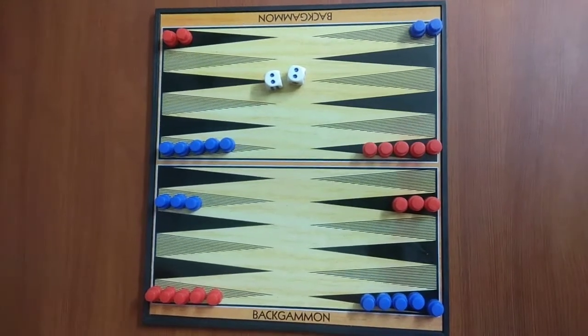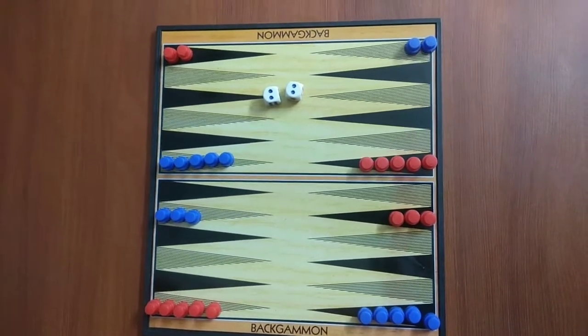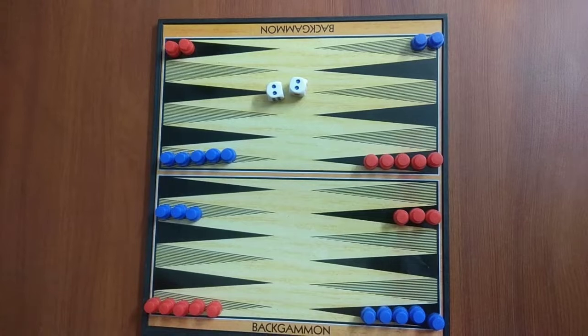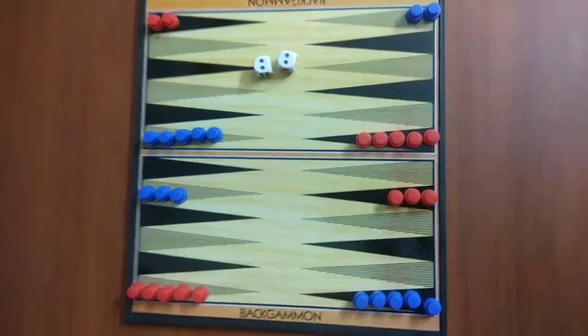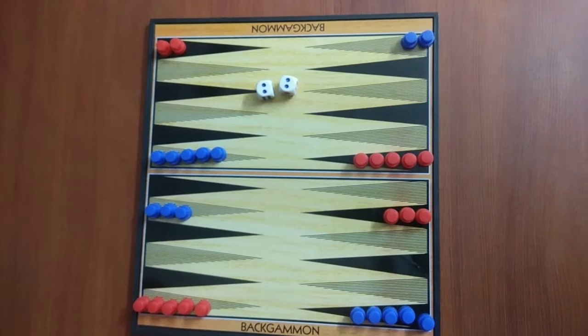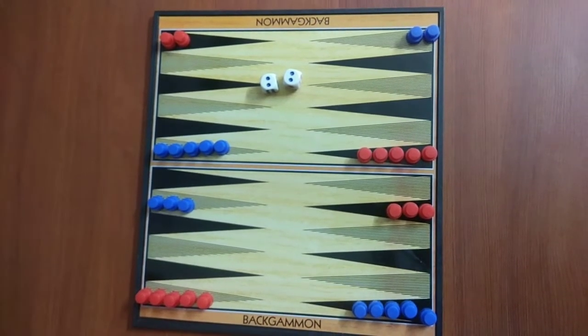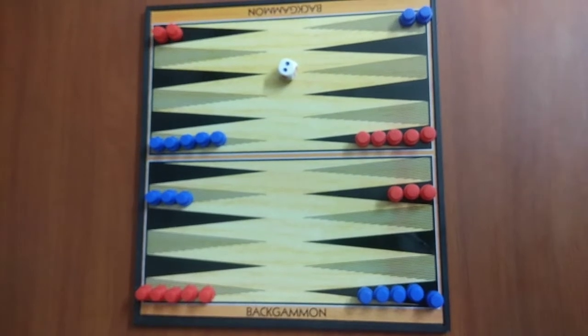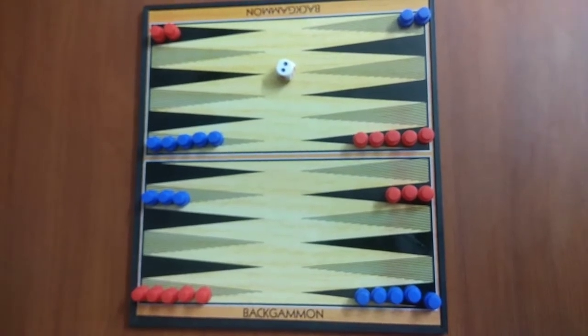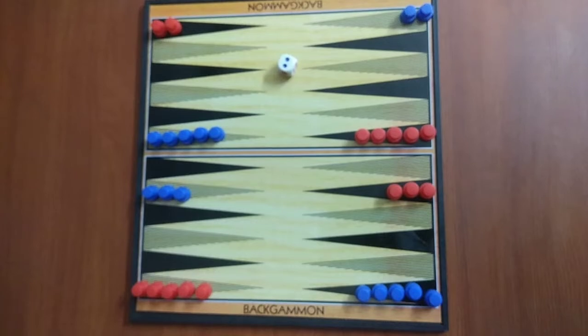A player cannot be moved a piece to a point that is occupied by 2 or more other player pieces. But they can stack their own pieces on the single point. If a player moves a piece to a point with a single other player piece on it,